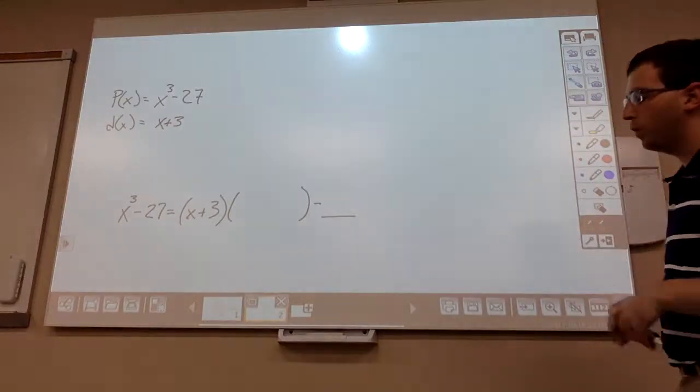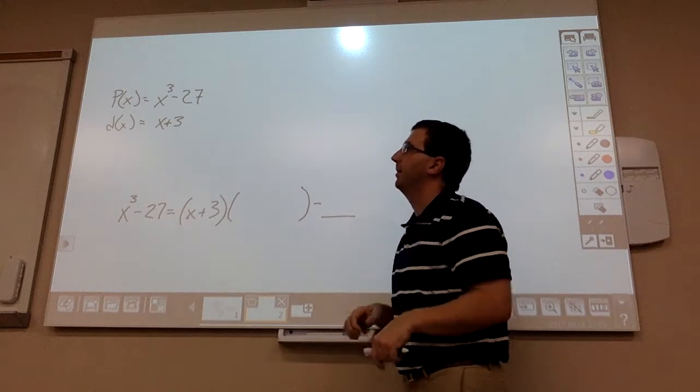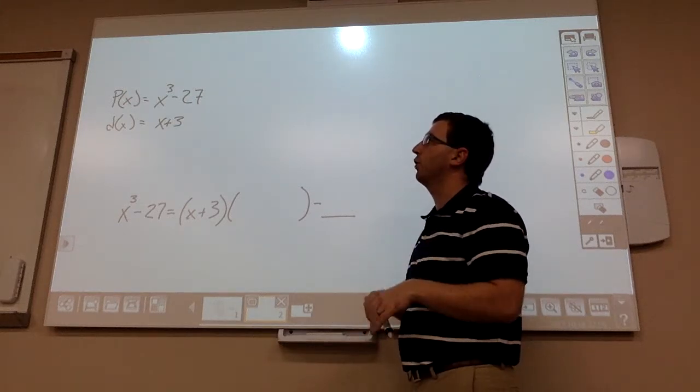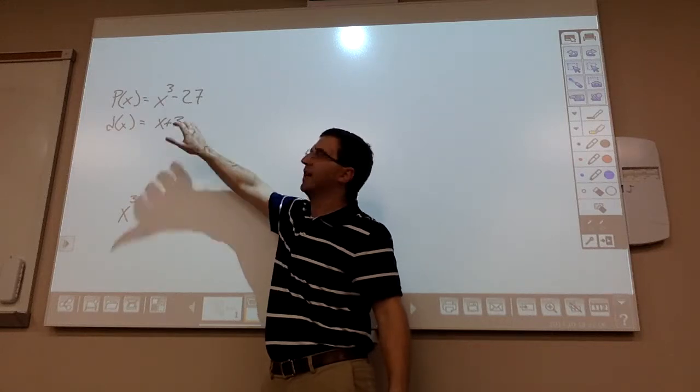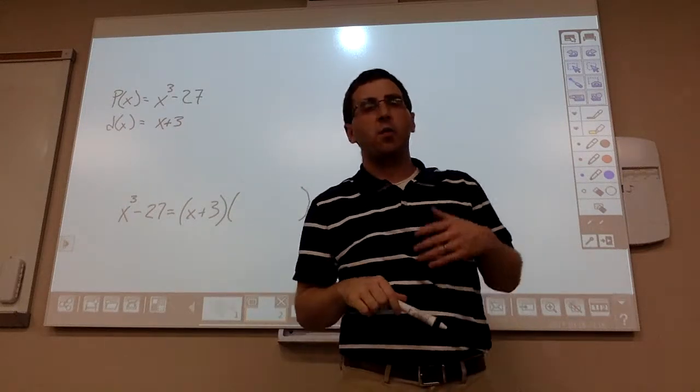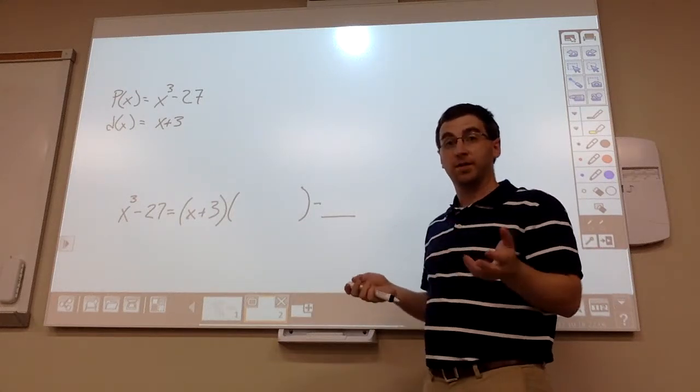All right, so on this one, what we're asked to do is to figure out, between our original polynomial x³ - 27 and then our divisor is x + 3, figure out what the missing pieces of our quotient and remainder are by using long division.